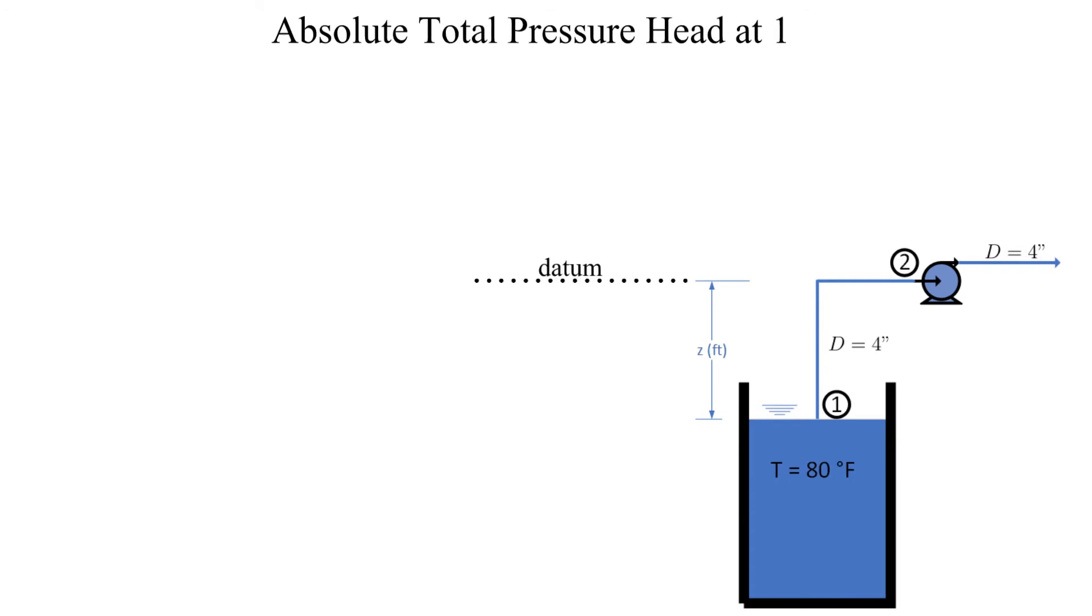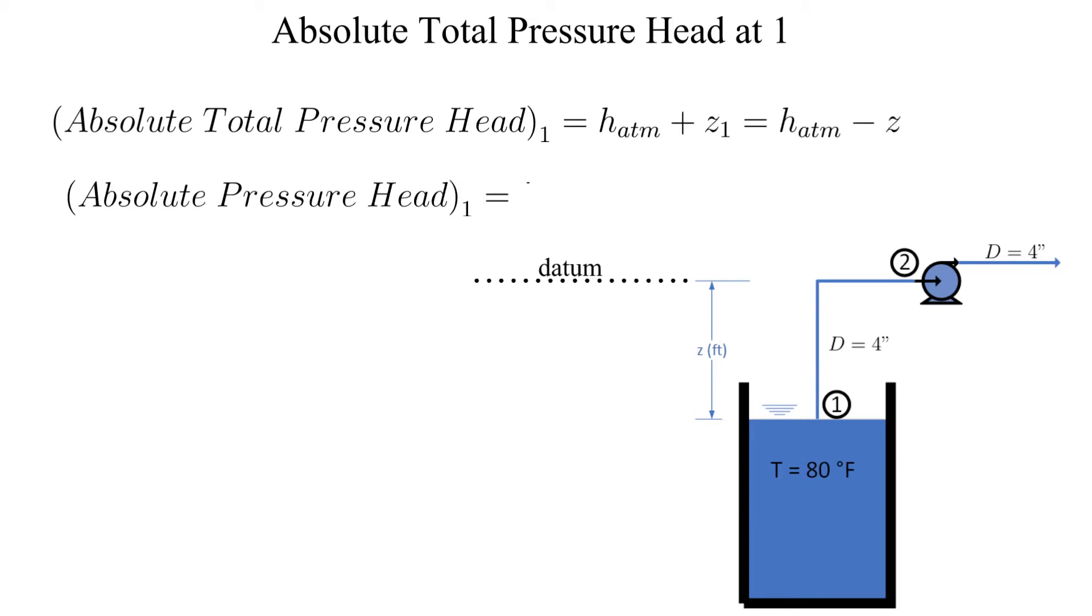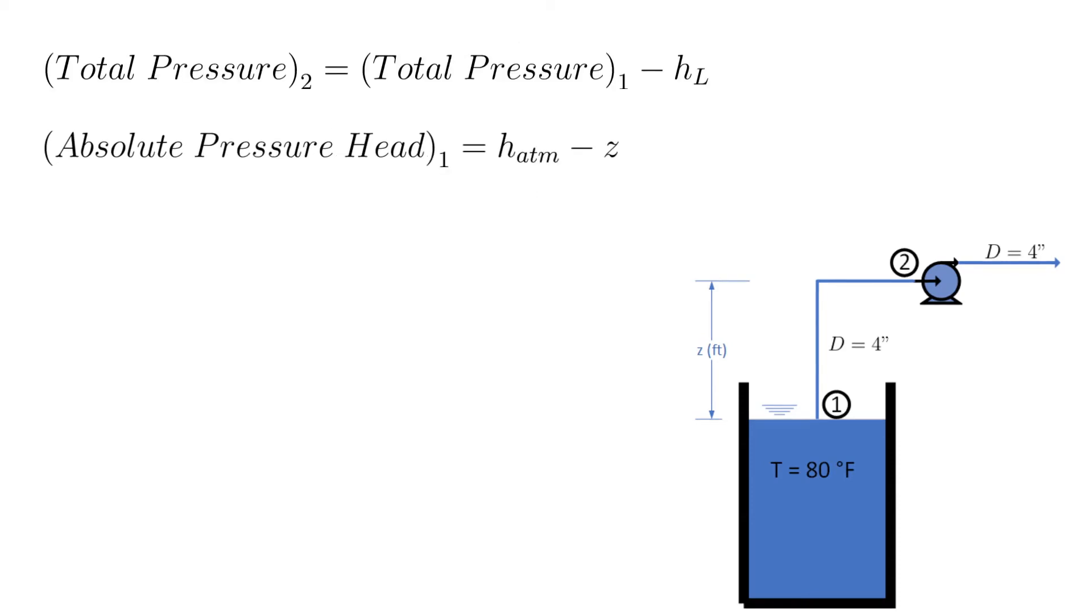First let's find the absolute total pressure head at one. Substituting the unknown values we get that the absolute total head at one is equal to the atmospheric pressure head minus the unknown elevation z. Now let's use conservation of energy to solve for the absolute pressure head at point two, the pump suction.